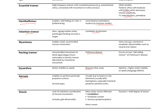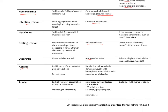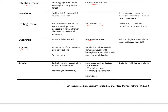Apraxia is an inability to perform particular purposeful actions, usually due to lesions in the dominant — typically left — hemisphere, especially in the frontal and posterior parietal cortex. Ataxia is lack of voluntary coordination of muscle movements, usually seen as gait abnormalities, and typically signifies a problem in the cerebellum, vestibular system, proprioceptors, or possibly a spinal cord lesion. Dystaxia simply means a mild degree of ataxia.